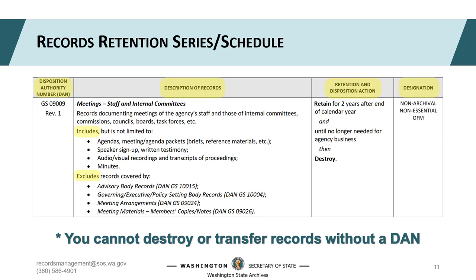This is a screenshot of one record series — Meetings, Staff, and Internal Committees — that you'll find in COR and the state general schedule. Retention schedules are lists of record types. Each type of record has a Disposition Authority Number, or DAN. DANs are unique identifiers that authorize the retention and disposition of a record. DANs don't make much sense on their own, but in the context of an entire schedule, they distinguish one series from another. DANs are important to include in inventories, box content lists, or disposition logs.